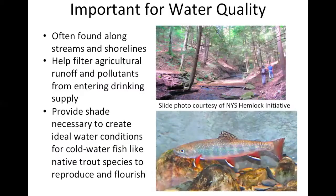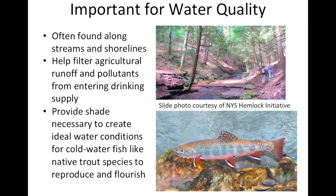We need to protect this resource. Hemlocks are also very important for water quality. They're often found along streams and shorelines of lakes. They have a very shallow branching root system, which helps to filter out agricultural runoff and pollutants from entering drinking water supplies, and are even purposefully planted around reservoirs. They provide shade necessary to create ideal water conditions for cold water fish like our native trout species. It's really about protecting that native food web — even the linkages between fish and trees that people often don't think about.